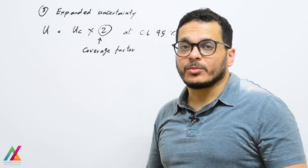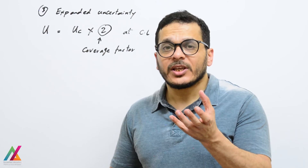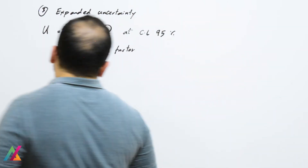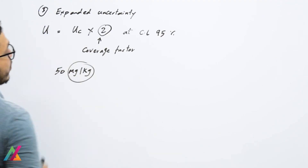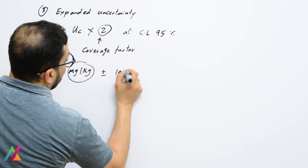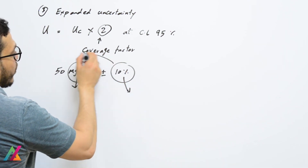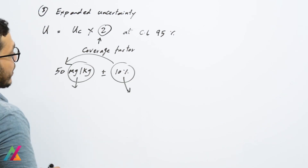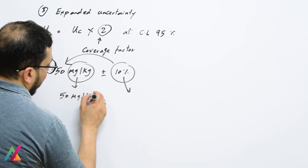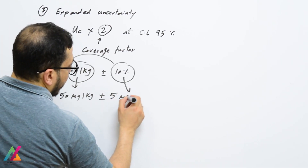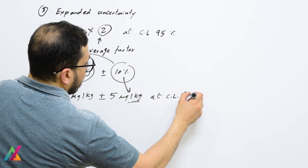According to EURACHEM/CITAC guide IU 1725 (2017 edition), the measurement uncertainty shall be converted to the unit of the analyte. For example, if the result is 50 µg/kg and measurement uncertainty is 10%, you calculate 10% of 50 µg/kg to convert it to the same unit. The final result would be reported as 50 µg/kg ± 5 µg/kg at 95% confidence level.